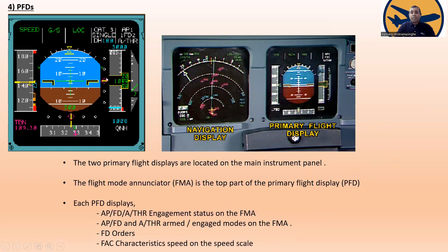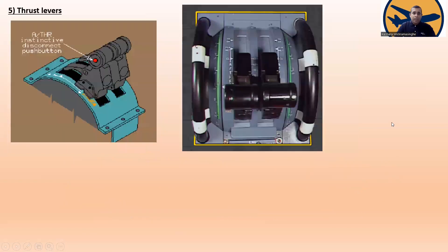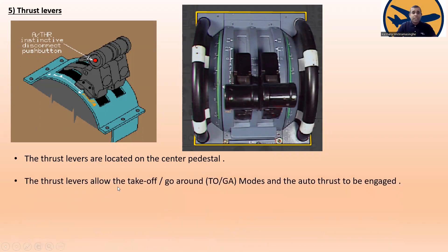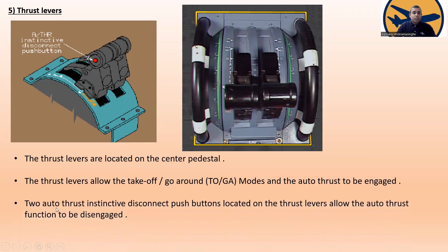Number five: thrust levers. Here you can see the thrust lever — this is the diagram and this is the actual view. There is an auto thrust instinctive disconnection push button on the thrust lever. The thrust levers are located on the center pedestal. The thrust levers allow TOGA modes and auto thrust to be engaged. The auto thrust instinctive disconnect push buttons on the thrust levers allow the auto thrust function to be disengaged.